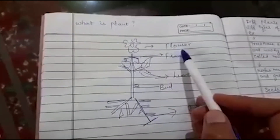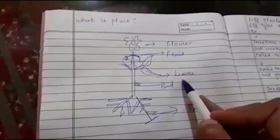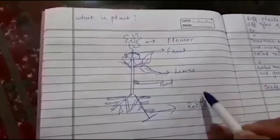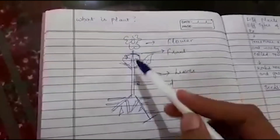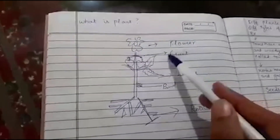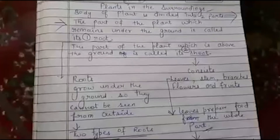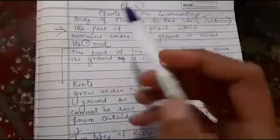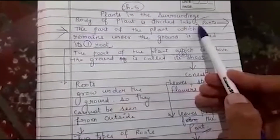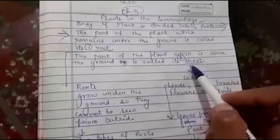Today we will learn about plants. A plant consists of flowers, fruit, leaves, buds, and roots. The body of a plant is divided into two parts: the first is the root and the second is the shoot.